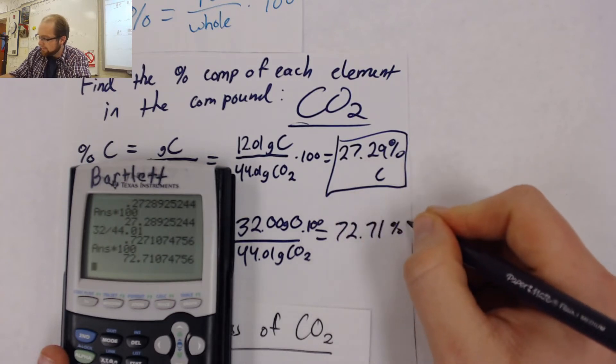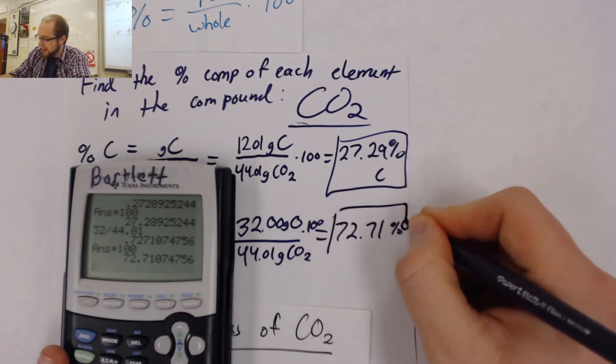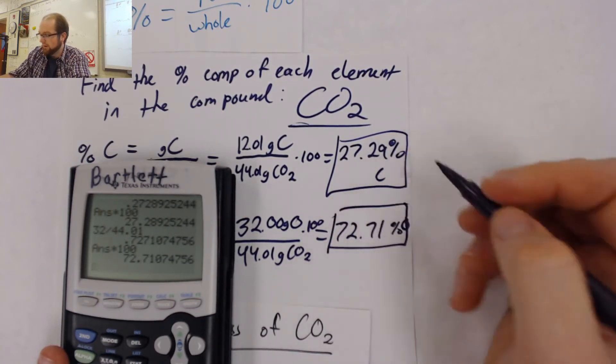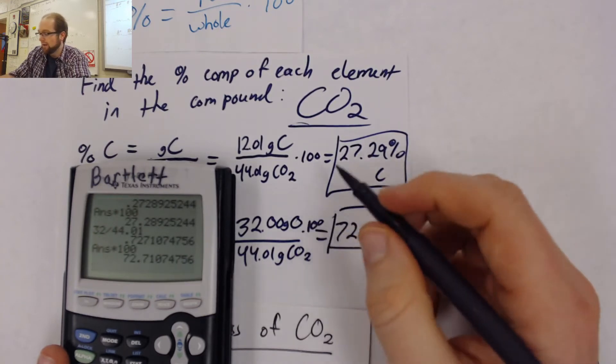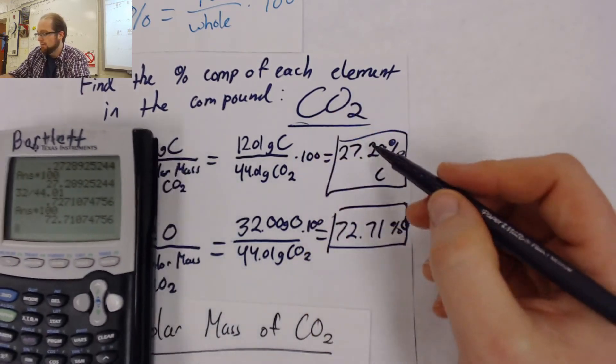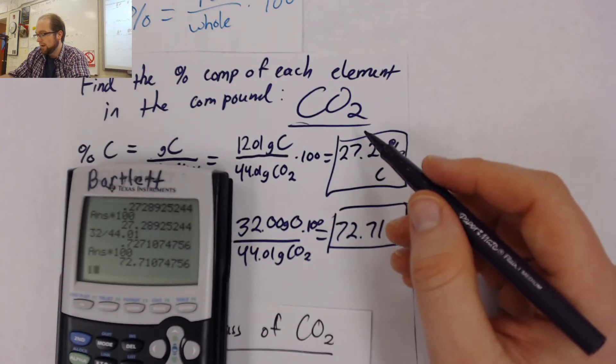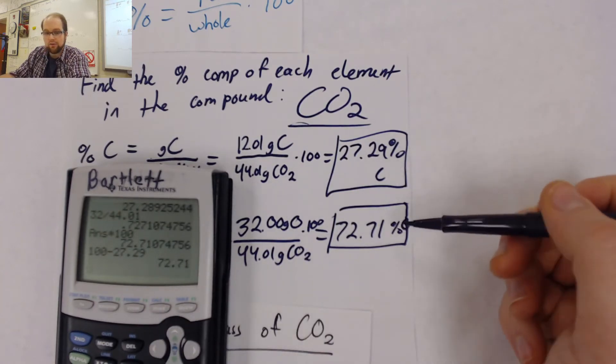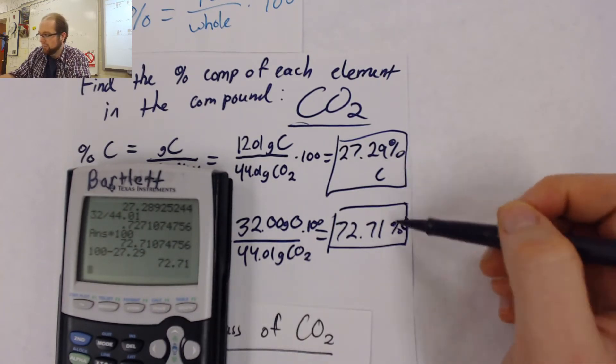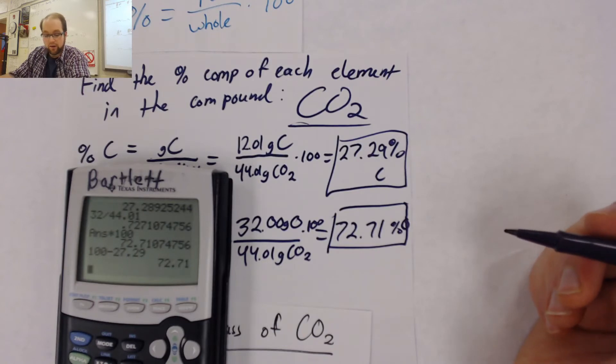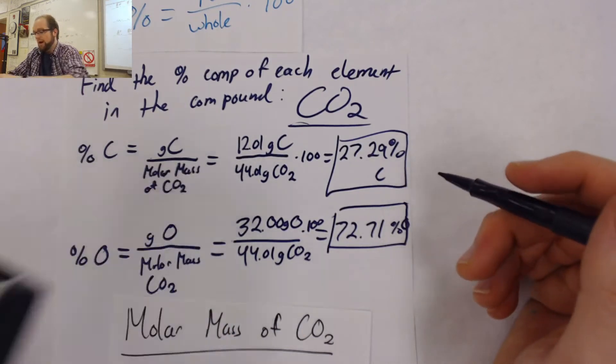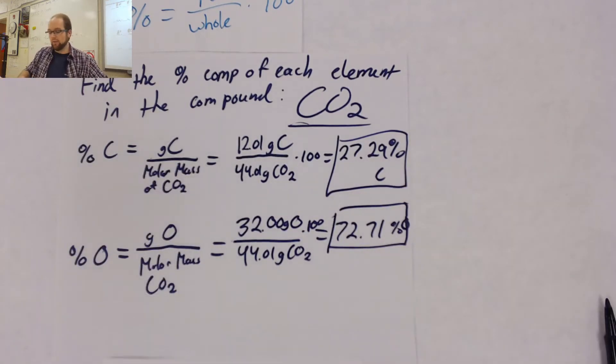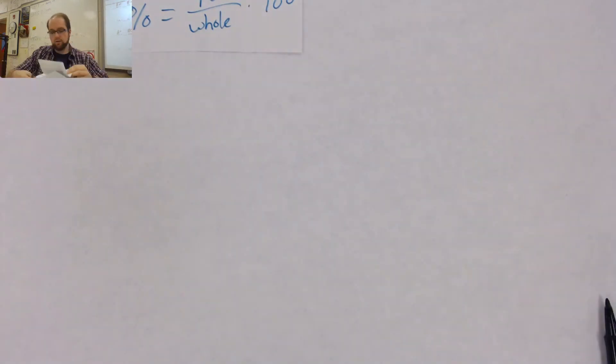And hey, that makes sense because if we add up our two percentages, they should equal 100. And in fact, if you'd found the 27.29 and you knew there was only one other element, you could just subtract that from 100 and you get our answer that we got for our oxygen, right? Because these two add up to 100. Simple example, but let's take a look at a trickier one, one that involves a little bit more math.